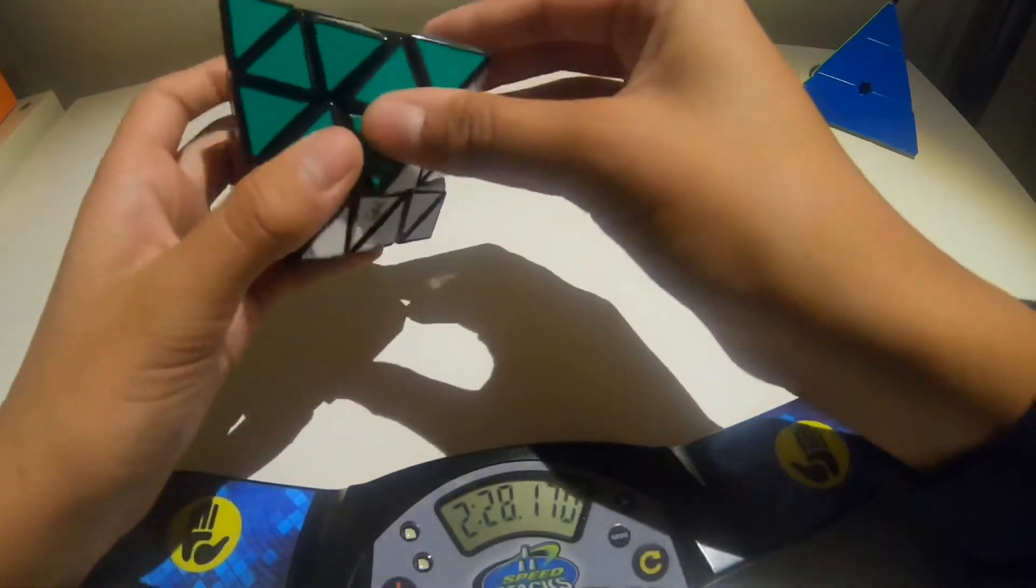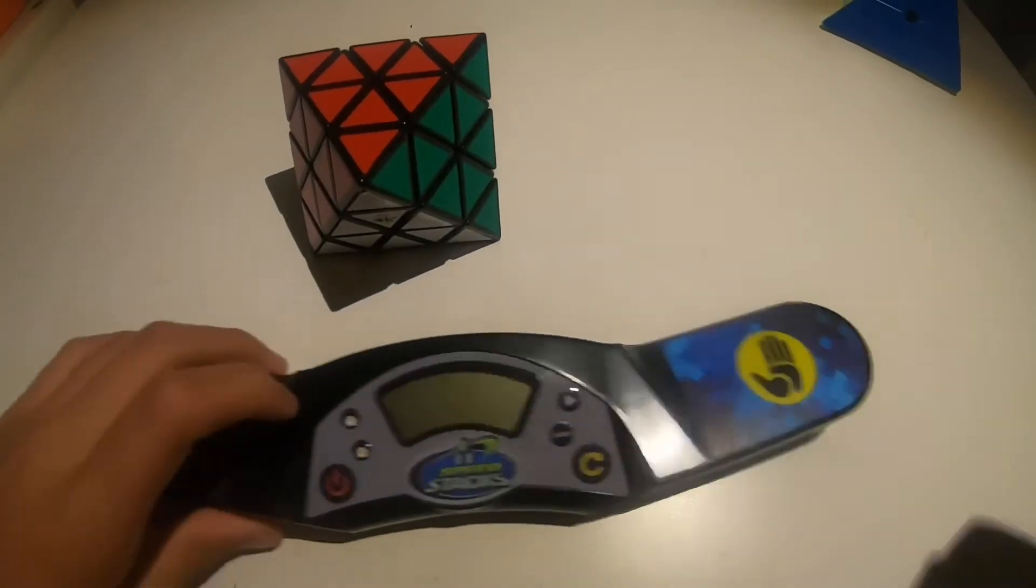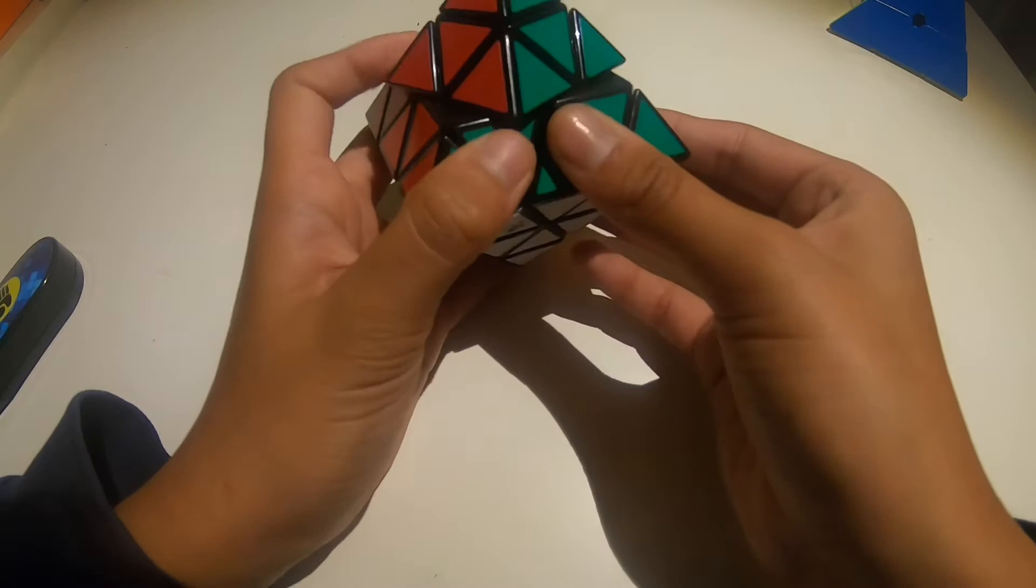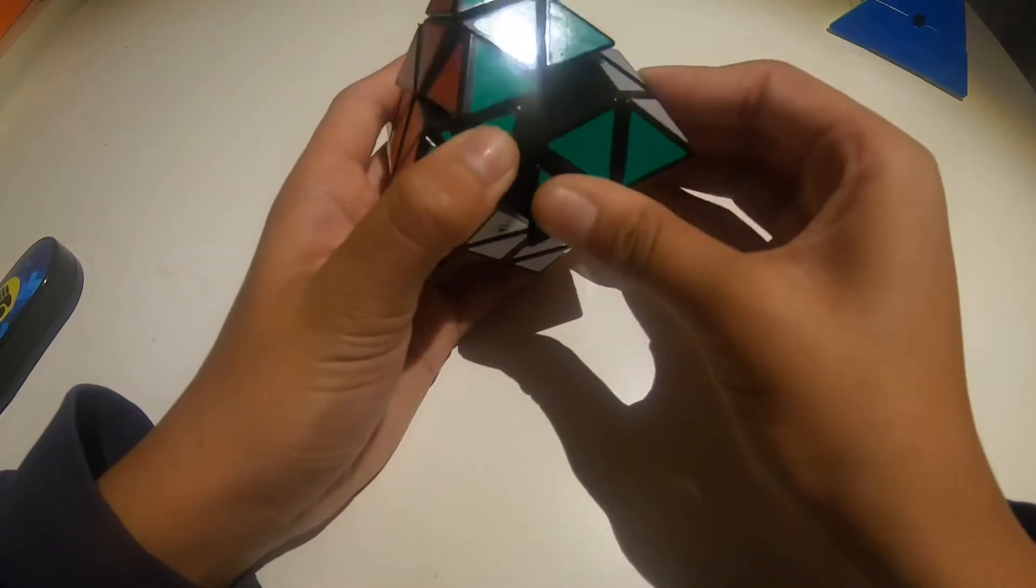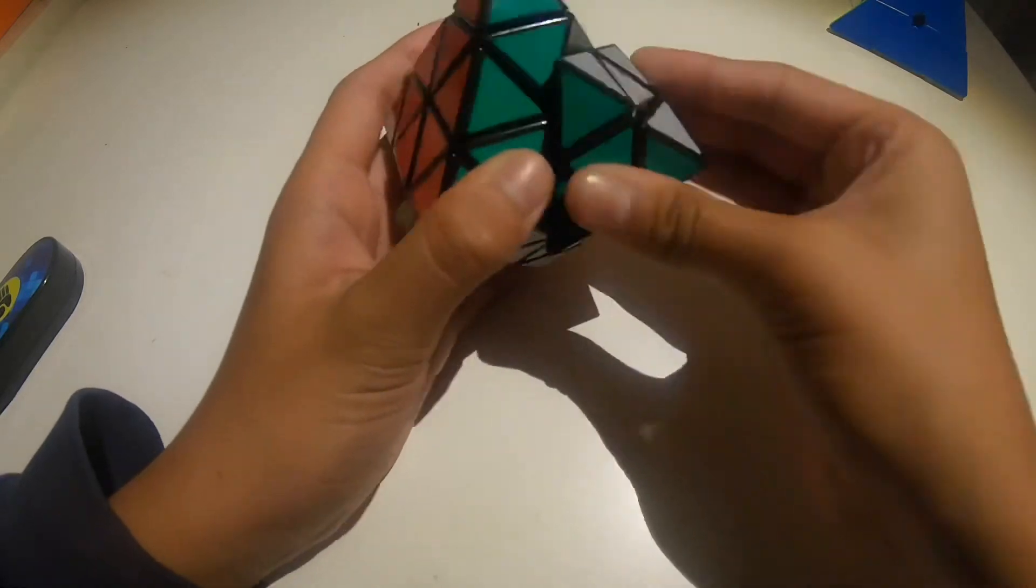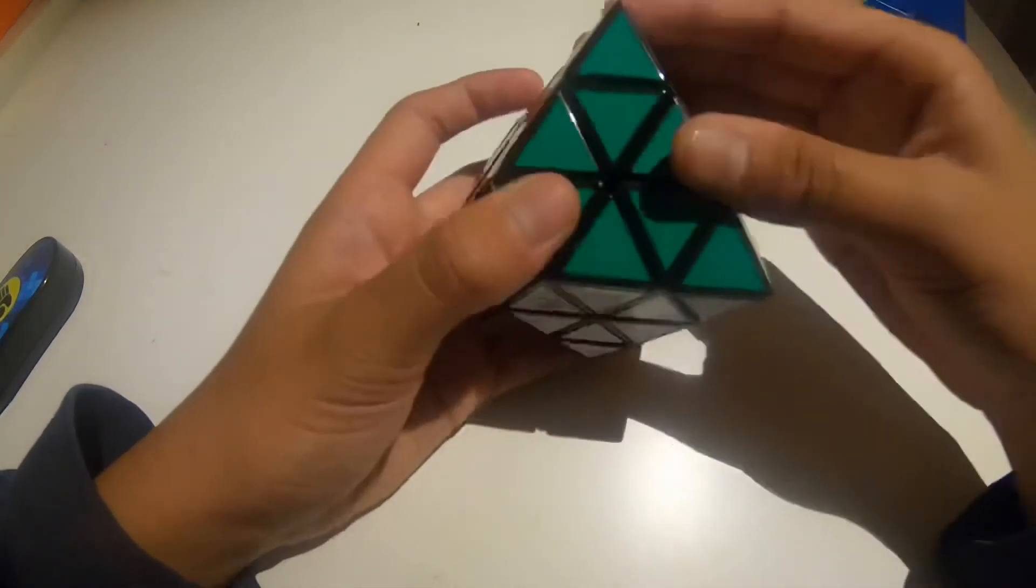And it kinda turns well. I guess, let's just test the corner cutting. Although, remember this is a non-WCA puzzle. Non-speed cube. So we can test corner cutting. Oh! Corner cuts a little bit. Whoa! Actually, it's got a little bit.